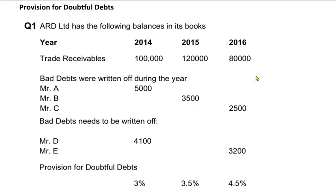The prudence concept states that losses going to happen in the future — we need to anticipate those expenses and book them immediately. This is the concept behind provision for doubtful debt. Doubtful debt is a debt that can turn bad in the future and we are going to estimate it. We are going to learn all the concepts with the help of a question.